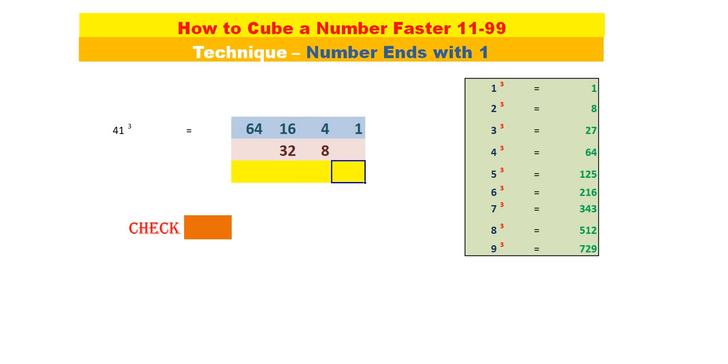Now we will add the answer. 4 plus 8 is 12, so 1 carries. 1 plus 16 plus 32 is 49, so 9 and 4 carries. 4 plus 64 is 68. So 41 cubed is 68,921.